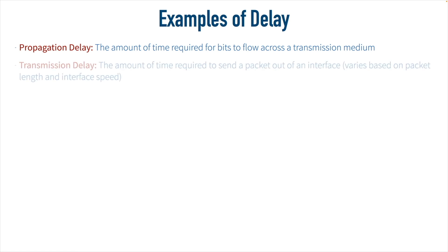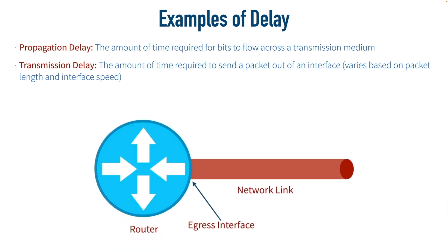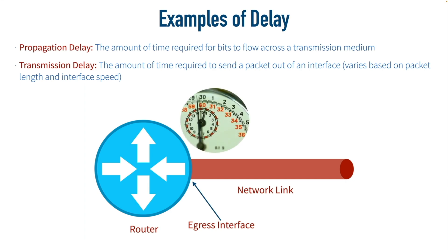Another type of delay is transmission delay — the amount of time it takes for a data packet to exit an interface like a router interface. This will vary based on the interface speed and the packet size. As the packet exits that interface, the clock is ticking, giving us our transmission delay. For an extreme example: back when I started with networking, a 56 kilobit per second circuit would take 214 milliseconds to send a 1500-byte packet out of that interface — a significant delay that can destroy voice quality if you're doing voice over IP. In today's networks with higher speed links, that's probably not going to be an issue, but remember the overall latency is the sum total of all these delays.